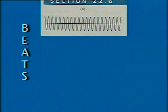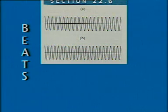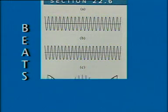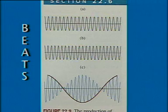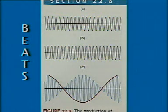Now that you know what interference of sound is, let's define beats. The regular variation in loudness with time, heard when two sounds of slightly different frequencies are heard together, is a result of interference between the two waves. The beat frequency equals the difference in frequency between the two sounds. The closer together the frequencies of the sounds, the slower the beats.